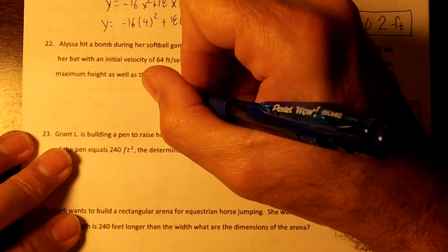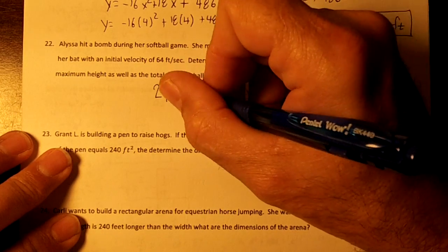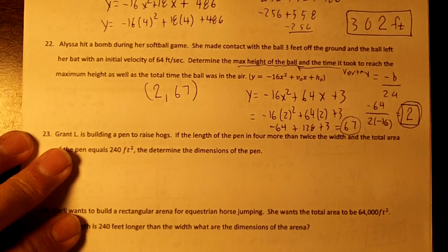So at 2 seconds, the ball is 67 feet up. That's going to be your vertex.